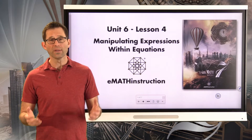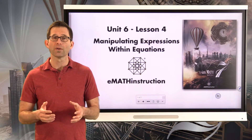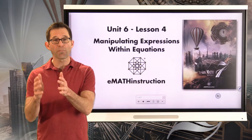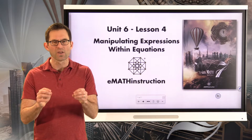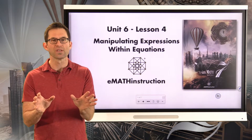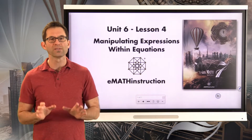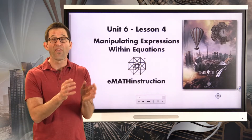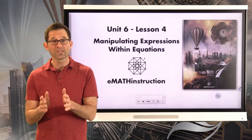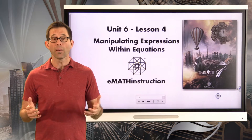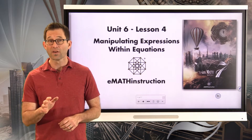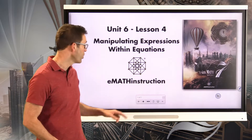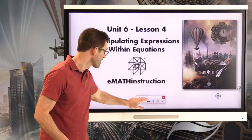Really what we're doing today is a combination of what we did in Unit 5, when we did a lot of work simplifying expressions — taking complicated expressions and using the properties of real numbers to get them in their simplest form. We're going to put that together with our two-step solving techniques to solve some equations that look rather nasty.